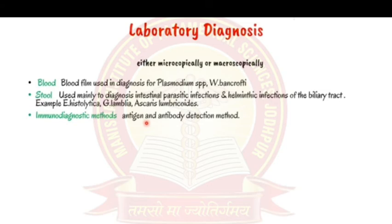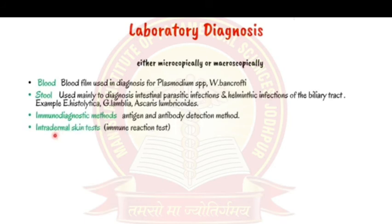Immunodiagnostic methods include antigen and antibody detection. For Plasmodium, antigens such as histidine-rich protein 2 (HRP2) and plasmodium lactate dehydrogenase can be identified using antibodies. Conversely, antibodies produced by the human body against a parasite can be identified using known antigens.